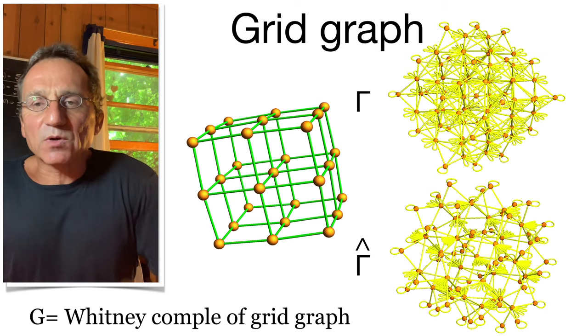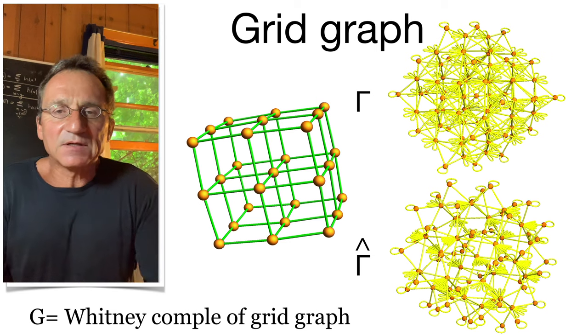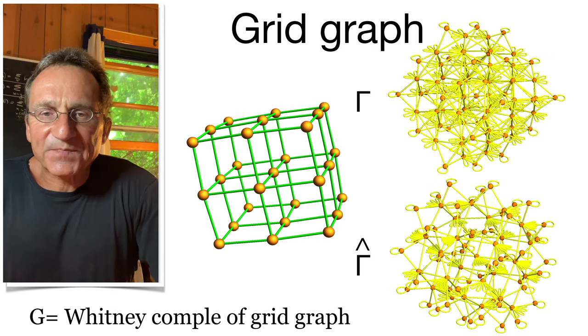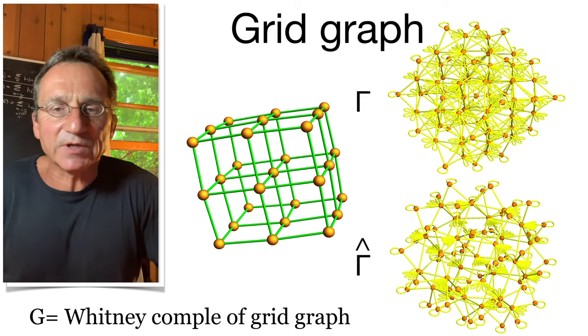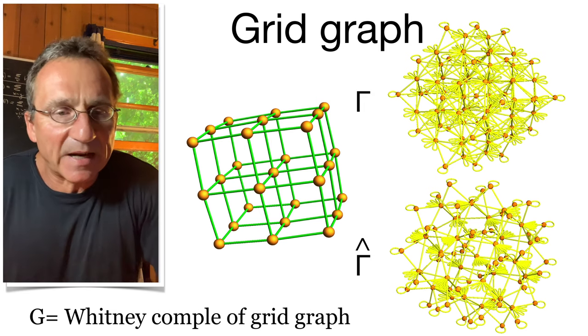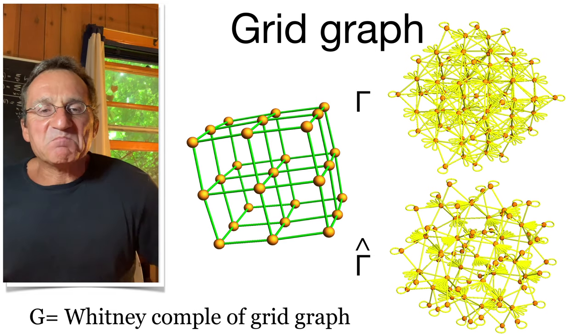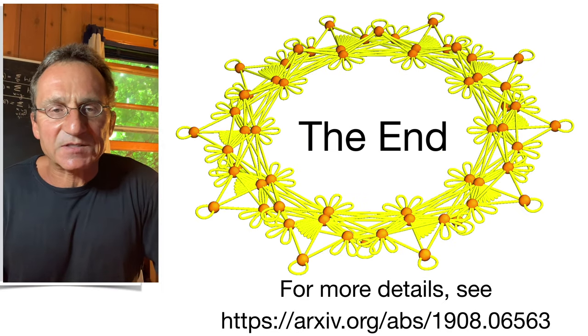Here we see a larger example. G is the Whitney complex of a grid graph. We see here the two isospectral graphs. We could also do the limit, take the Vanhove limit and go to infinite bound, get infinite bounded operators, which have the same density of states, define non-isomorphic crystals with the same density of states.